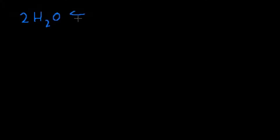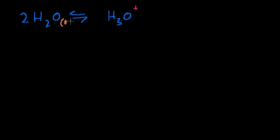In the last video, we learned that if you just leave water to itself, it auto-ionizes. I have two molecules of water. There's some probability — and it's an equilibrium — that one of the hydrogens on one of the waters bumps off and just joins the other one. So you could end up with a hydronium ion, which is an ion because it has an extra hydrogen, so it has a plus charge. Everything in here is in an aqueous solution — water is obviously dissolved in water.